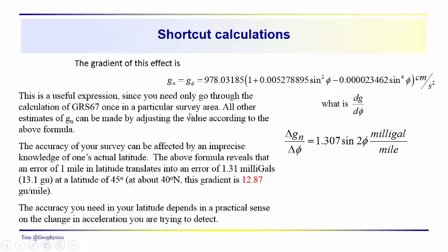GRF67, if you take the derivative of the normal gravity with respect to latitude, you get an expression like this, 1.307 times the sine of 2 times the latitude. And the constant over here gives you milligals per mile. So, you can see that the influences can be fairly significant. If you're off and your estimate of latitude takes you off by a mile, that in mid-latitudes translates into about 1.31 milligals, or 13.1 gravity units, just to remind you of some different units.